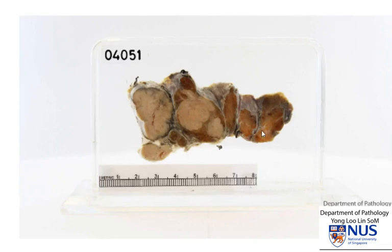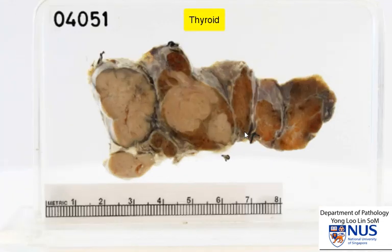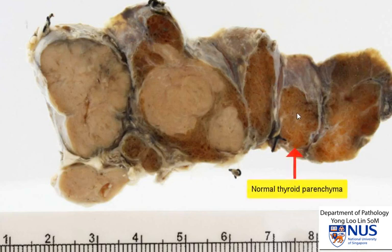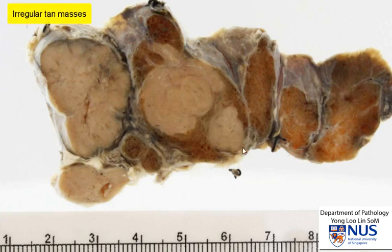This is a specimen of a thyroid gland, and we are looking at the cut surface. The anatomy is slightly distorted, but we can see that this is the brown color of the thyroid parenchyma, and that there are two irregular masses here.